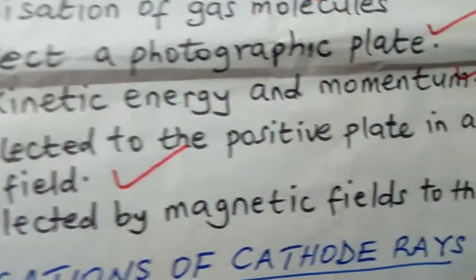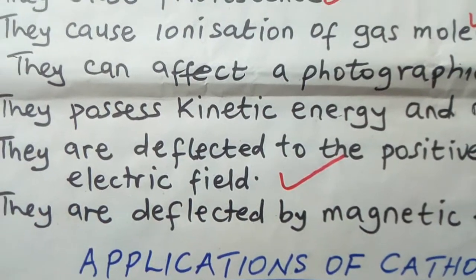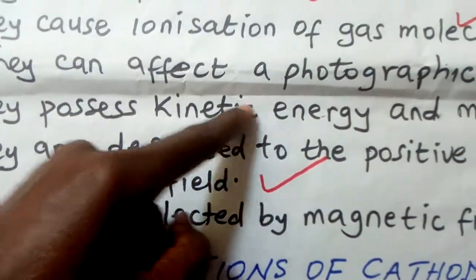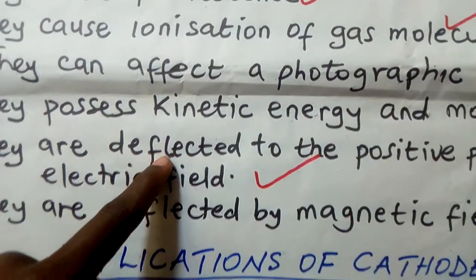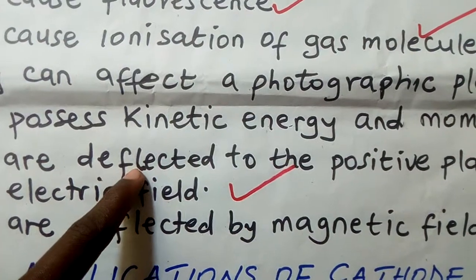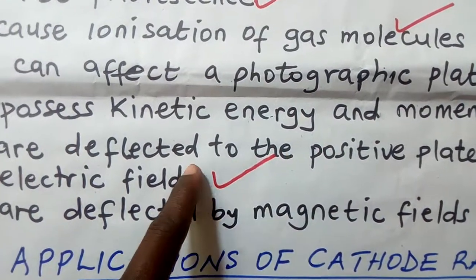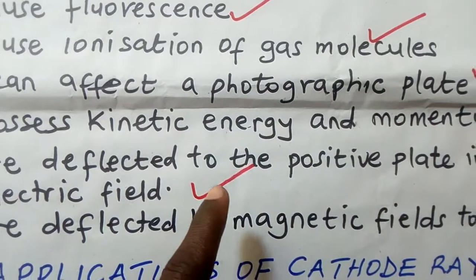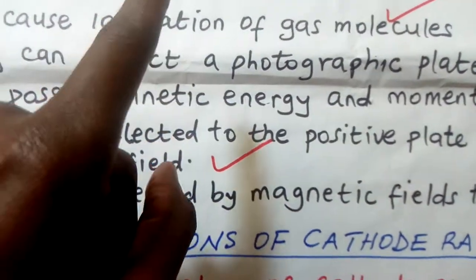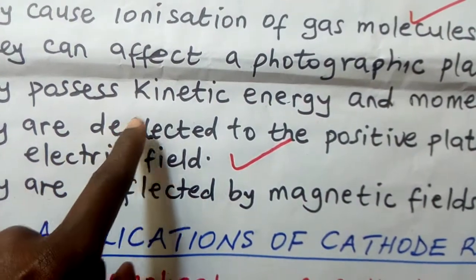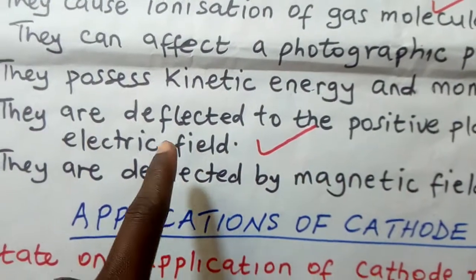They are deflected to the positive plate in an electric field. If you have two plates — one positive, another one negative — and you allow cathode rays to pass in between them, because cathode rays are negative they are going to be attracted to the positive plate. Because positive and negative attract — unlike charges attract. So they are deflected towards the positive plate in an electric field.